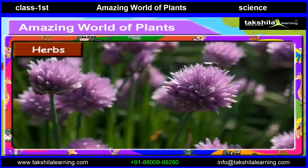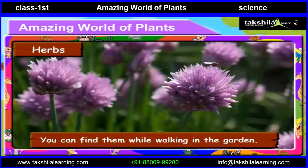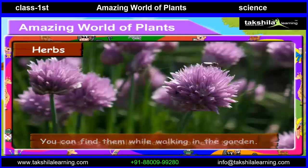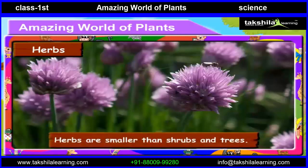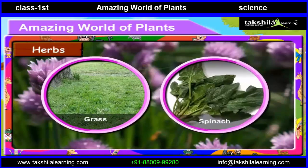Now let us learn about herbs. Herbs are small plants with soft and weak stem. You can find them while walking in the garden. Herbs are smaller than shrubs and trees. Examples are Grass and Spinach.